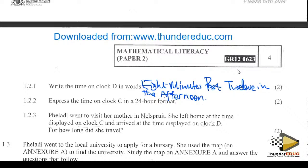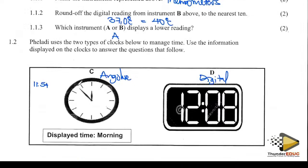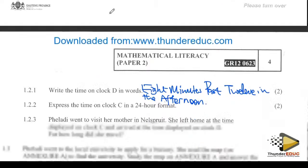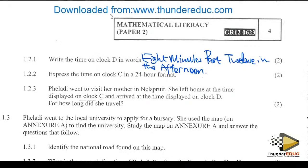Express the time on clock C in the 24-hour system. Clock C is here. The displayed time is morning, so it will still be 11:54.